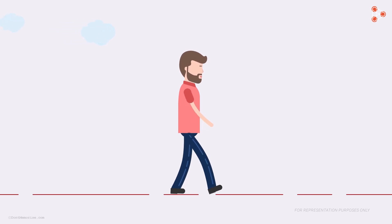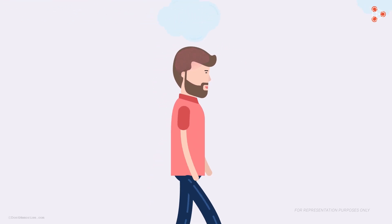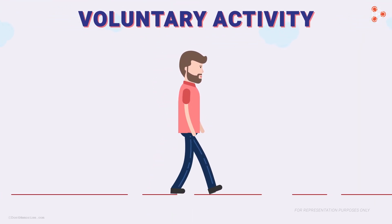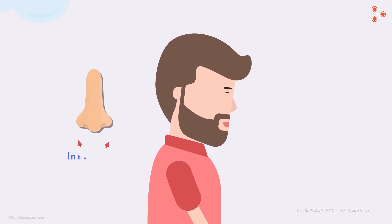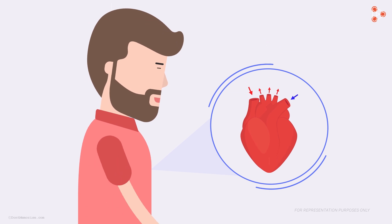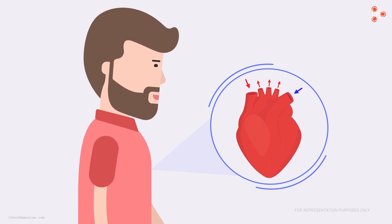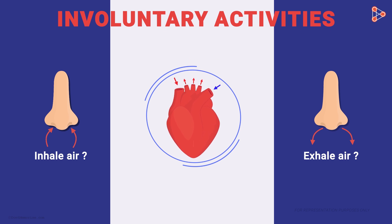Imagine we have to walk from one place to another. For this, our brain thinks about the movement, instructs the respective muscles, and helps us perform the task. This is what we know as a voluntary activity. Now, do we need to remind ourselves to inhale and exhale air, or remind our heart to beat and pump blood? No — that just happens without our notice. These are examples of involuntary activities.